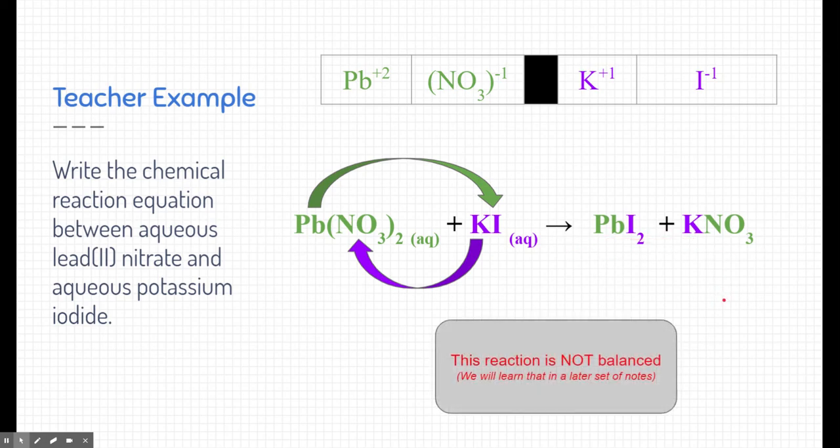Now one thing to note, this reaction is not balanced. If you notice that on the left side we have two sets of nitrate and on the right side we only have one set of nitrate. For now we're not going to worry about that. We're just writing a simple reaction to show how these two interact at their atomic level. We're learning about balanced reactions in the later set of notes when we talk more in depth about the different types of chemical reaction equations.